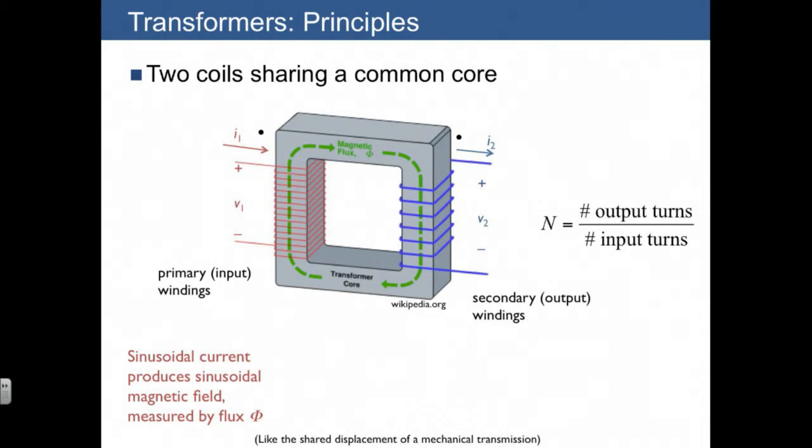What the sinusoidal current does is it induces a flux that's actually shared throughout the core. So that means that the secondary winding also feels the same magnetic field as the primary winding. And in this case, the effect is that the flux produces a sinusoidal voltage across the secondary windings.